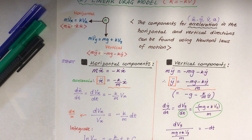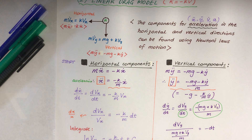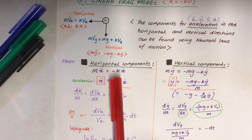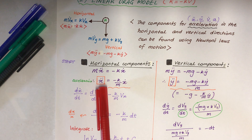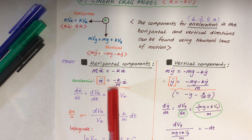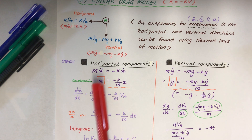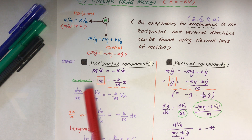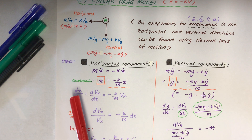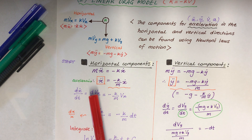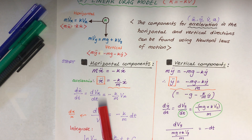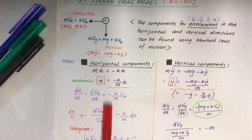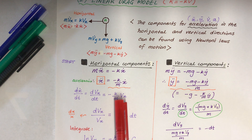We know that force equals the resistance force as well. So m times x double-dot equals minus k times x-dot, and in terms of acceleration, x double-dot equals minus k over m times x-dot. That was quite straightforward. I'm just changing this acceleration in terms of dt, so it'll be dx-dot over dt, or we can use dvx over dt. I'm going to use vx here — equals minus k over m times vx. Just the same.